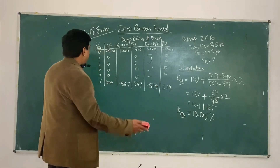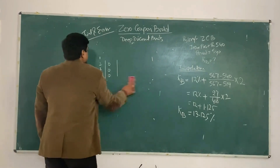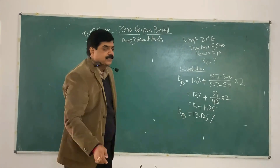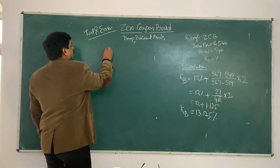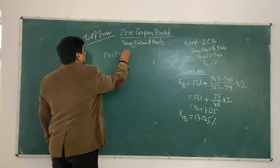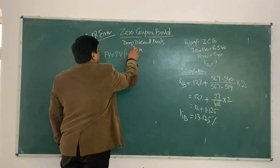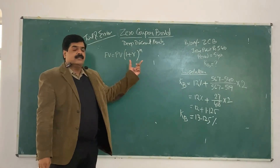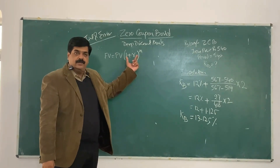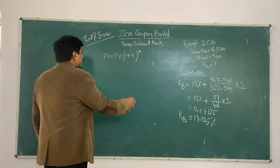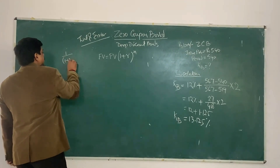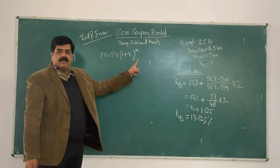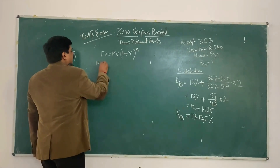If you remember the concept, the future value equals present value multiplied by (1 plus R) to the power of N. That is, future value equals present value times (1 plus R) raised to the applicable period.